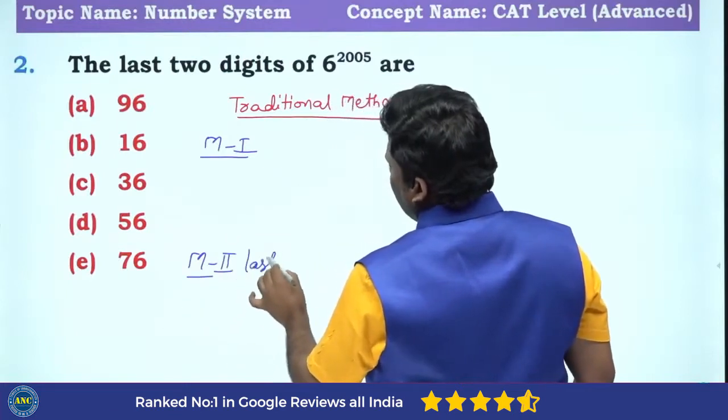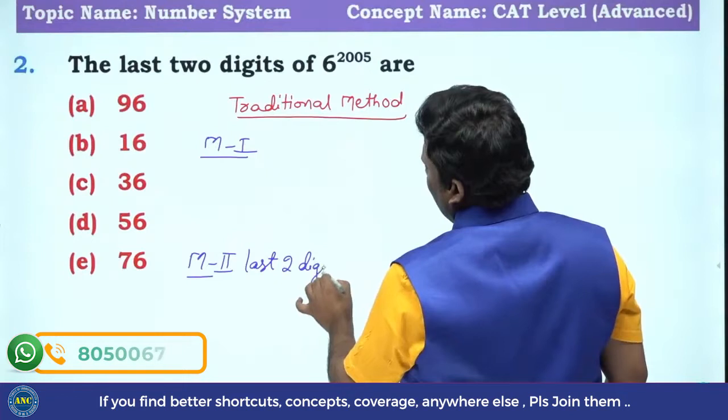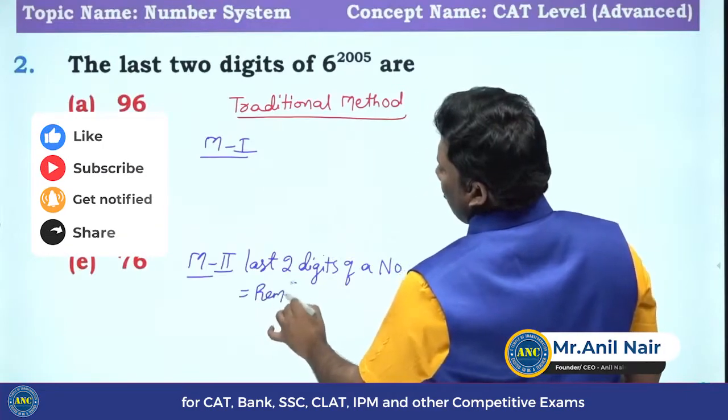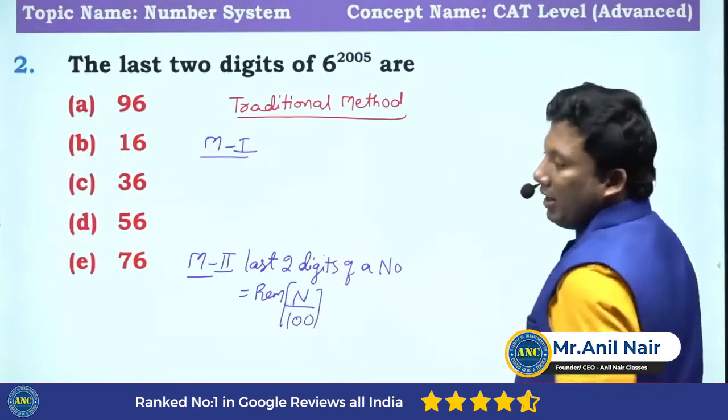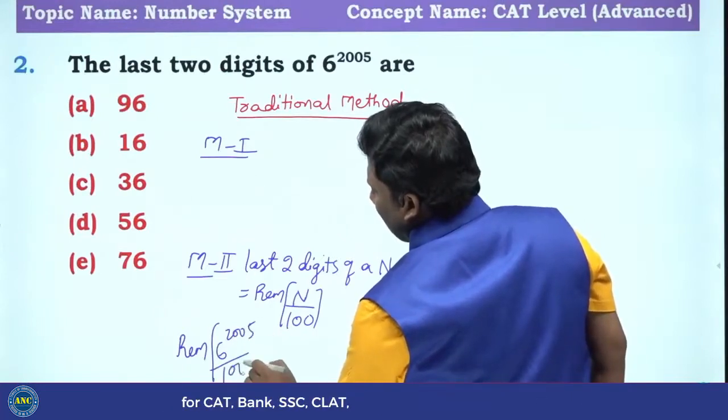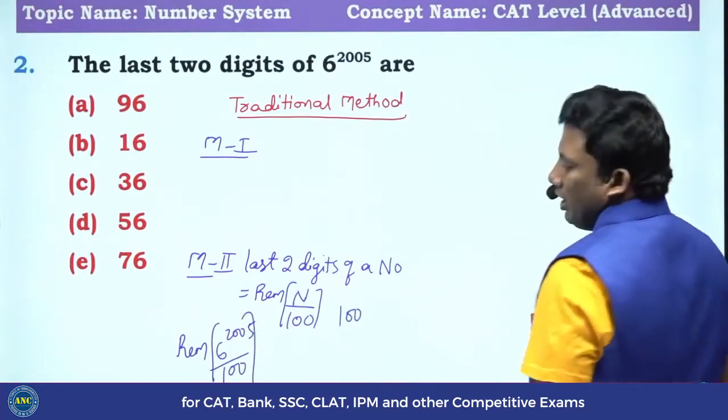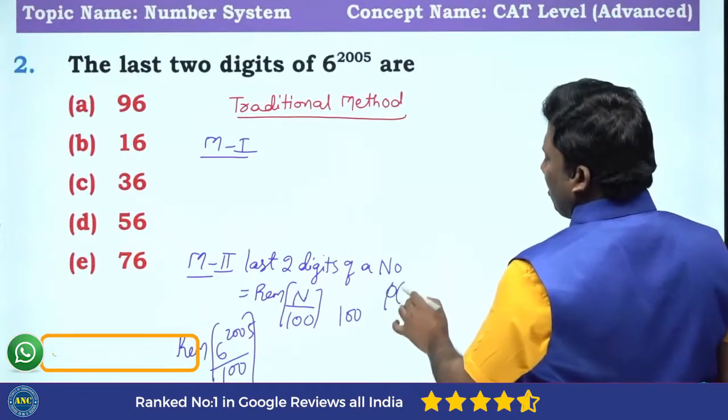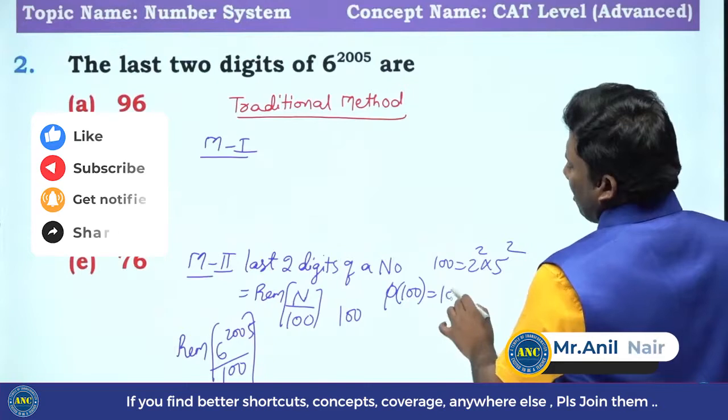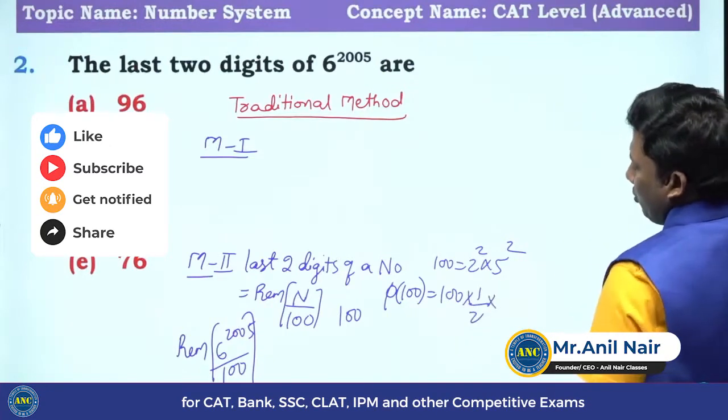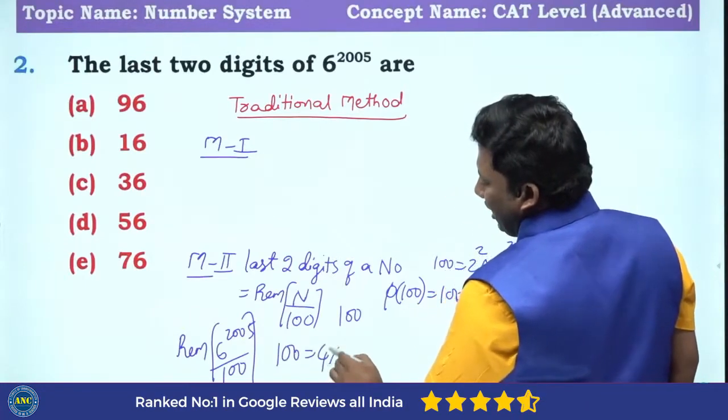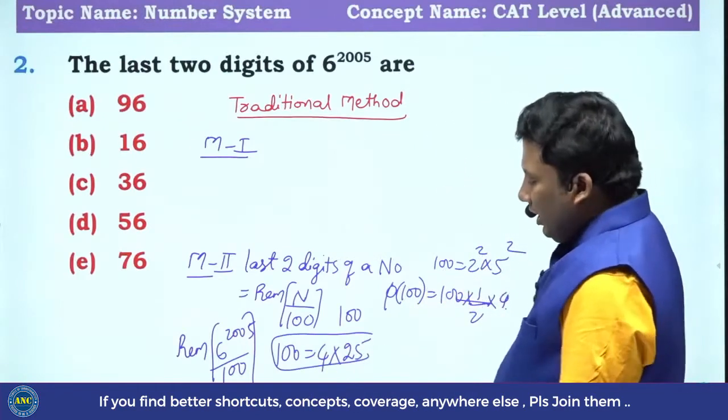Method 1: The last two digits of a number is the remainder when you divide the number by 100. So they will do 6 power 2005 divided by 100. 100 is a composite number. They will use the Toshant function of 100. 100 is 2 square into 5 square. Please go back and see the reminders class to understand how I'm doing this. Either they will do 1 by 2 into 4 by 5, or they will do 100 as 4 into 25. Chinese remainder theorem.